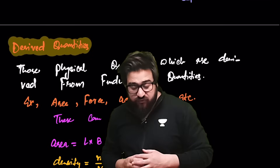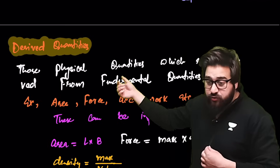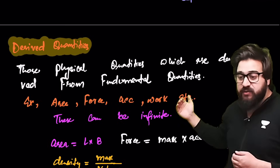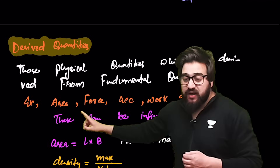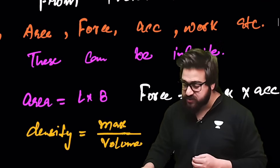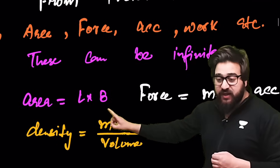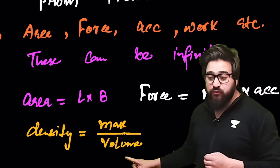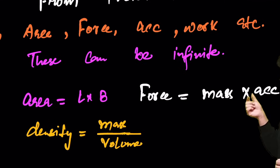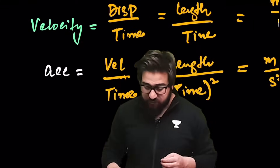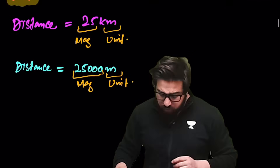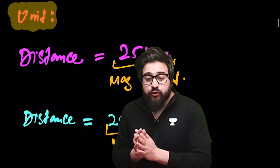Derived units are quantities derived from fundamental quantities. For example, area is length × breadth, density is mass ÷ volume, and force is mass × acceleration. So these are derived quantities.